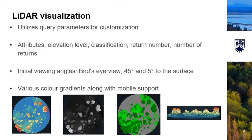This visualization utilizes query parameters to display different attributes and enable customization without distracting the user from the original purpose of supplementing the textbook. The customizations available include different attributes such as elevation level, classification, return number, and number of returns. Different viewing angles and various color gradients are available, along with mobile support which has reduced resolution.